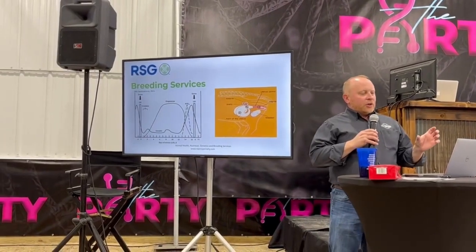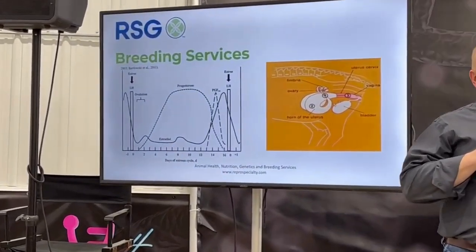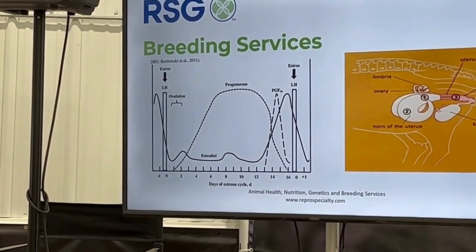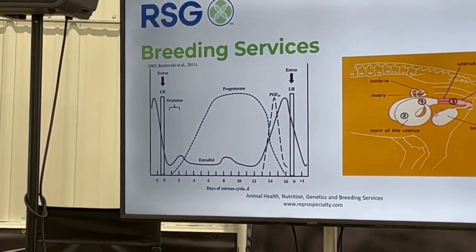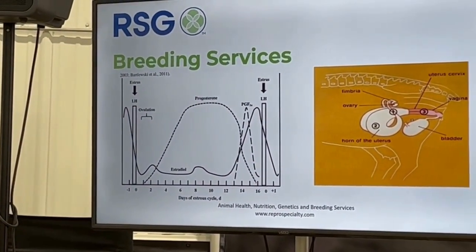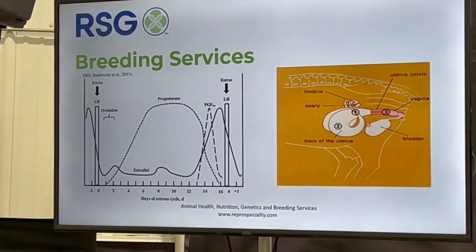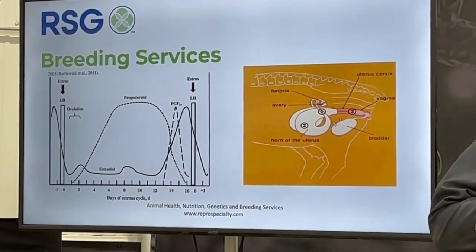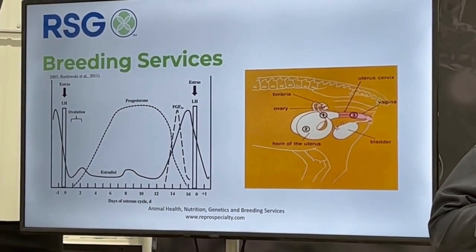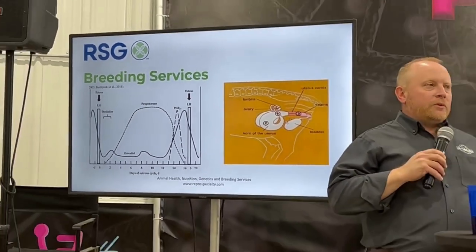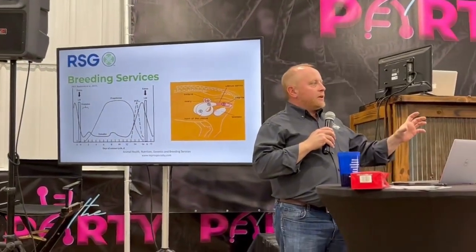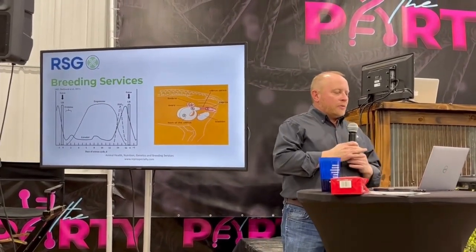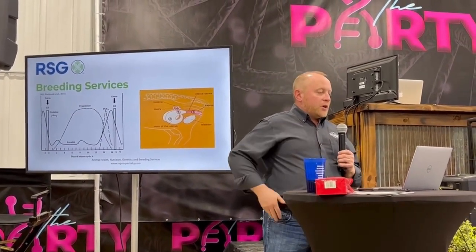So basically what that chart shows are all the hormone activities that are going on during our programming process. I think we get a lot of questions about what happens if the shot schedule is off, or why do we do the timing the way we do, or what is this hormone doing. So I wanted to put this up here and leave it a little bit open for what you guys want to talk about.